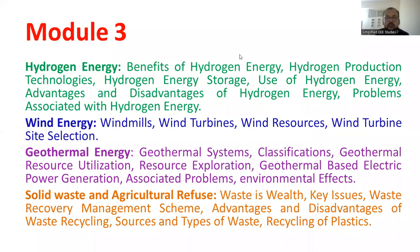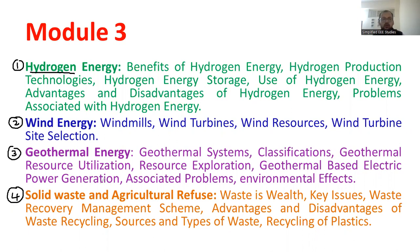Moving further, in the third module, as you can observe, it comprises four important segments. The first segment is hydrogen energy. The second segment is the wind power generation system. The third one is the geothermal system. The fourth one is solid waste and agricultural refuse. Regarding hydrogen energy, you need to understand why it is considered a very costly energy source — it is not easy to produce — and we will be discussing issues and challenges related to hydrogen energy.